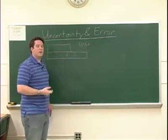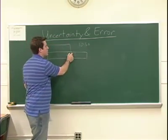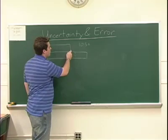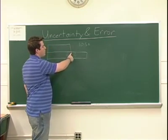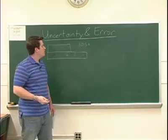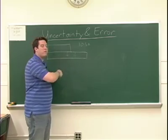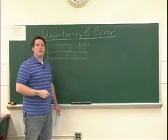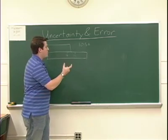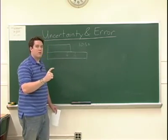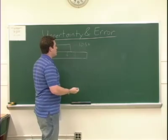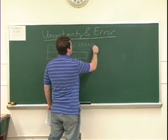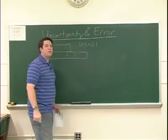But then we'd also like to assign an uncertainty to it based on the granularity of the lines on that ruler. We know that the object cannot be greater than 10.6, and it cannot be less than 10.4, simply by where it's fallen between those fine lines on the ruler. The spread between those two points, or rather half of it, is one-tenth of an inch. So we can say that our object is 10.5 plus or minus 0.1 inches.